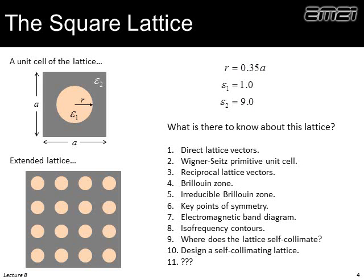The dielectric constant of the hole will be 1, and the dielectric constant of the fill will be 9, which corresponds to a refractive index of 3. So what is it we might want to know about this lattice? What are its direct lattice vectors? What does its Wigner-Seitz primitive cell look like? What are the lattice vectors, the Brillouin zone, and the irreducible Brillouin zone? How do we identify the key points of symmetry, construct a band diagram, and find the isofrequency contours? We also want to ask where does it self-collimate, and as a quick example we will design a self-collimating lattice.